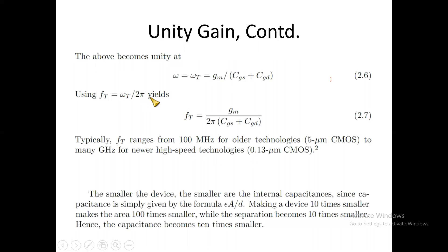FT will be ωT divided by 2π. FT is the frequency in Hertz while ωT is in radians per second. So FT equals GM divided by 2π(CGS + CGD). Typically, FT ranges from 100 megahertz for older technologies like 5 micrometer CMOS to many gigahertz for new technologies like 0.13 micrometer CMOS. Smaller devices have smaller internal capacitances. Since capacitance is given by ε*A/d, making the device 10 times smaller makes the area 100 times smaller while separation becomes 10 times smaller, hence capacitors become 10 times smaller.